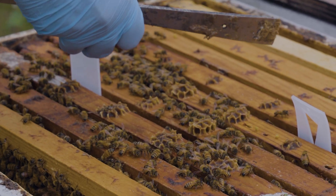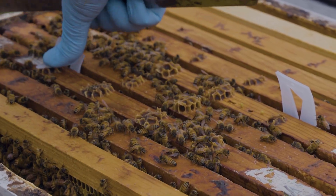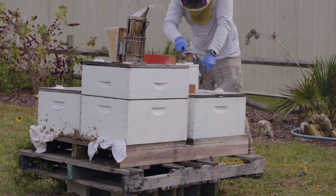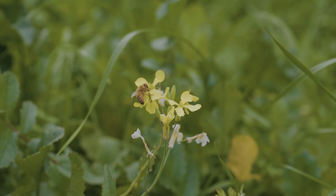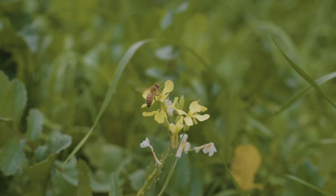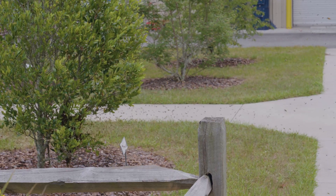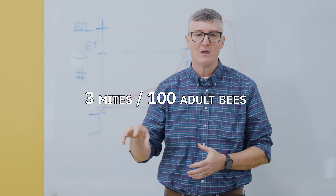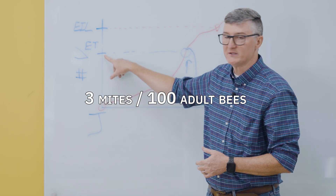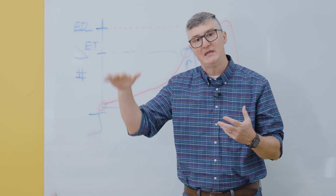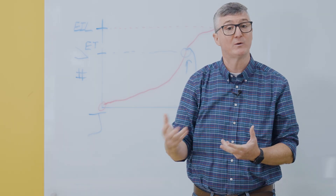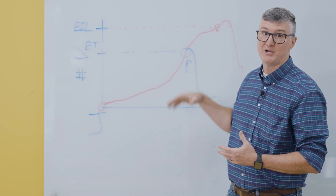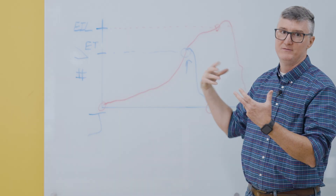Varroa will ultimately cross the economic threshold, and if we don't do something chemically to address it, they would then reach the economic injury level — essentially the point of no return. The good news is that in the honeybee world, the economic threshold has been worked out for Varroa. Biology is messy and it depends on the size of your colony, your location, and the season, but a good general rule of thumb is about three mites per 100 adult bees represents the economic threshold. As beekeepers, we're trying to keep Varroa populations below three mites per 100 bees as long as possible so we may not have to treat. But if sampling shows we've hit that level, we have to treat.